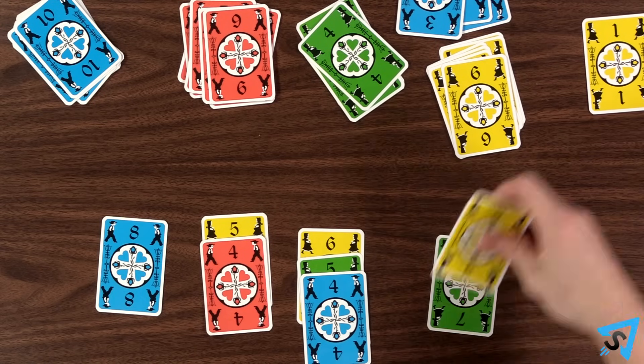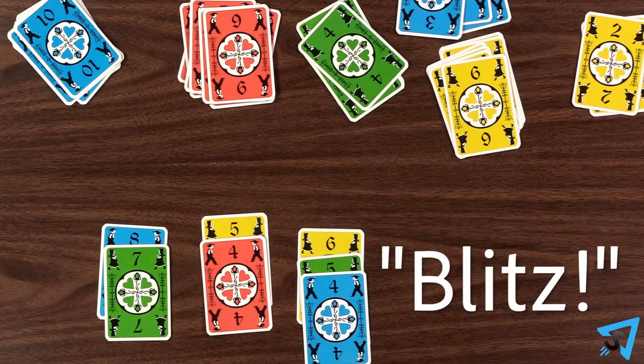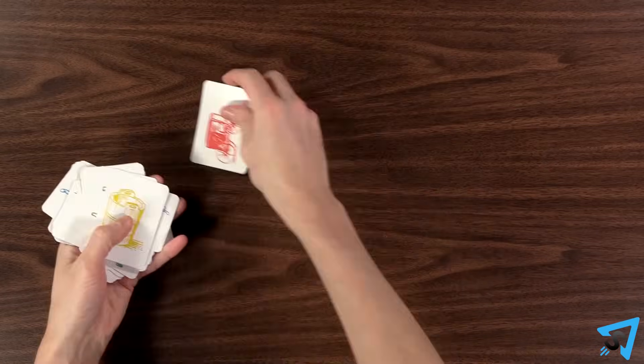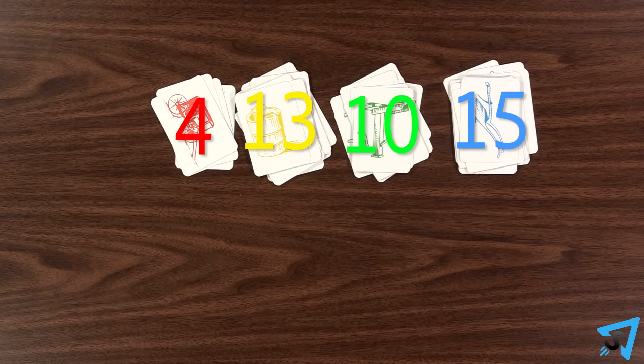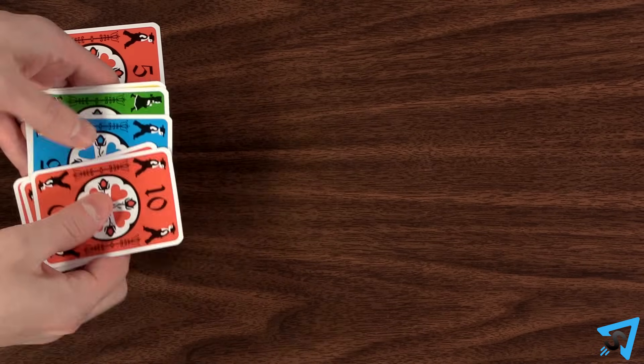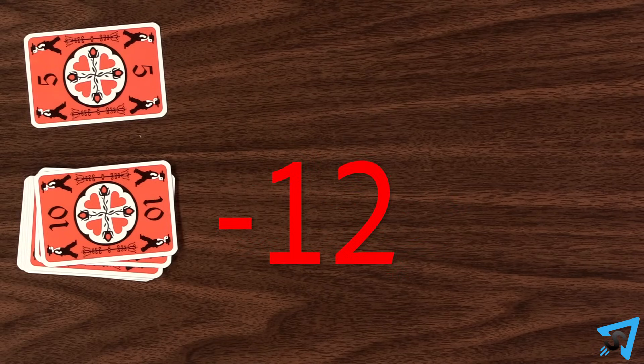The first player to use the last card in their blitz pile shouts blitz and all play immediately stops. Each player gains one point for each card they have in any dutch pile. Each player loses two points for each card remaining in their blitz pile.